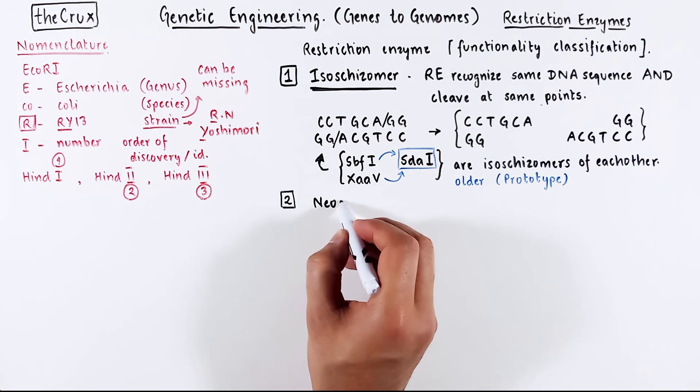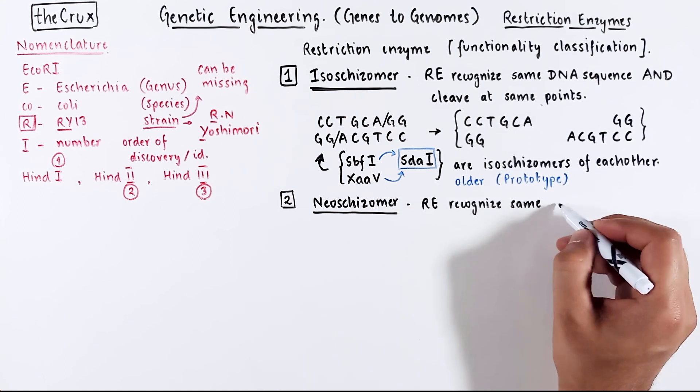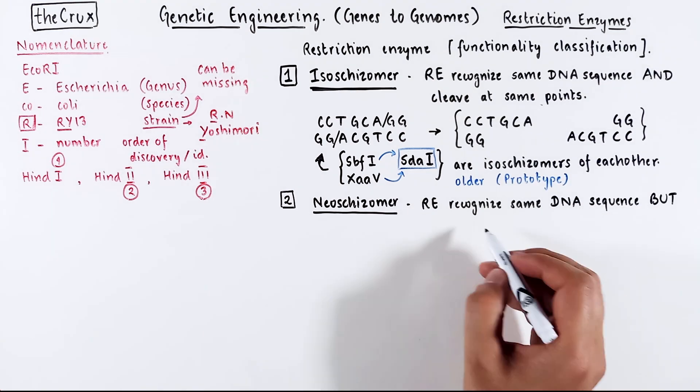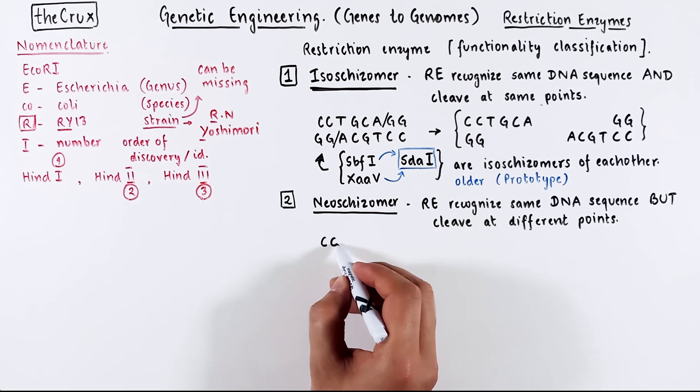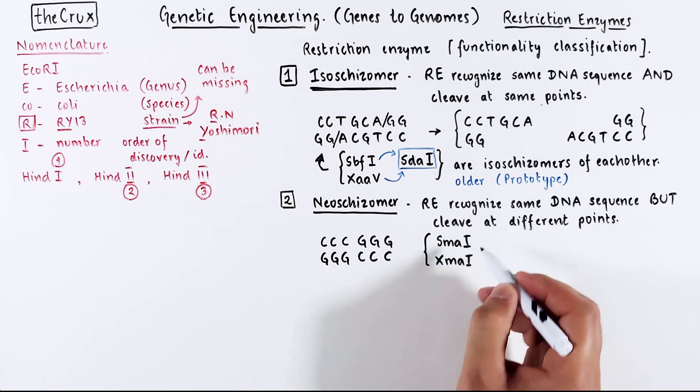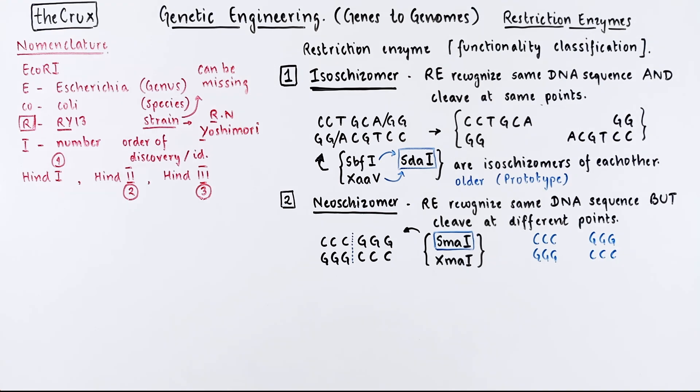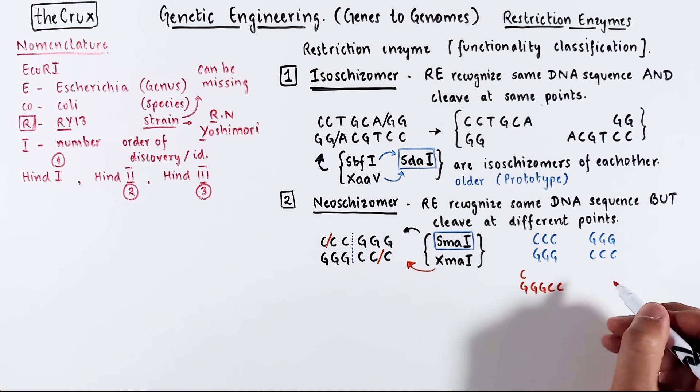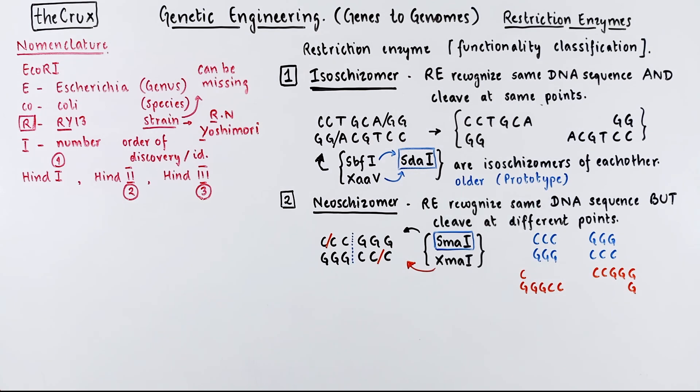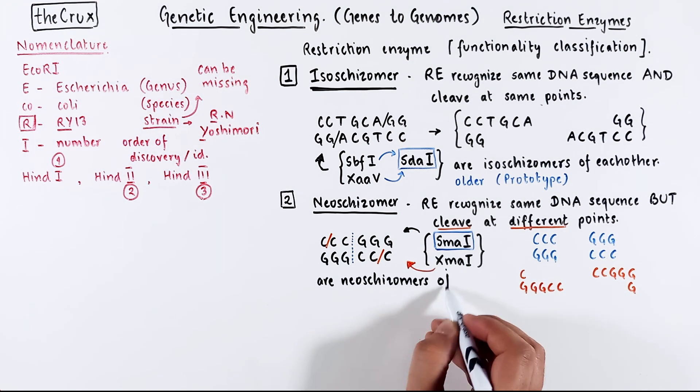Okay, second set of bucket is neochizomers. These are a set of restriction enzymes that recognize the same DNA sequence but they cleave it at different points. Take this palindromic DNA for instance. It is recognized by both SMA1 and XMA1. SMA1 cuts it in the middle, and the result looks like this. Whereas XMA cuts it on the sides, and the result look very different from the SMA1 cut. So, same sequence but cleaved differently, and the language is that these two are neochizomers of each other.